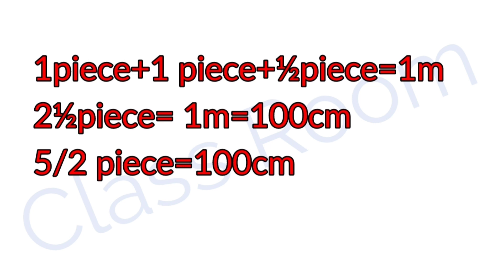1 piece plus 1 piece plus 1 piece plus half piece. The third piece is half piece, so 1 meter total. 1 piece plus 1 piece plus half of the third piece gives 1 plus 1 plus half equals 2 and a half pieces. 2 and a half is a mixed fraction, equal to 5/2.